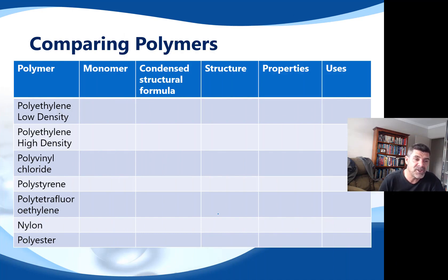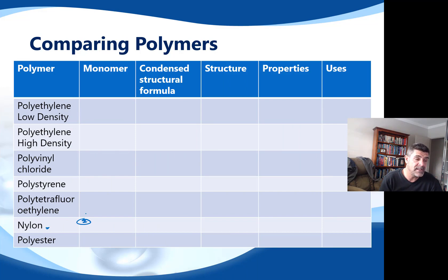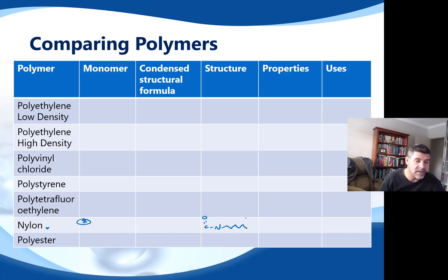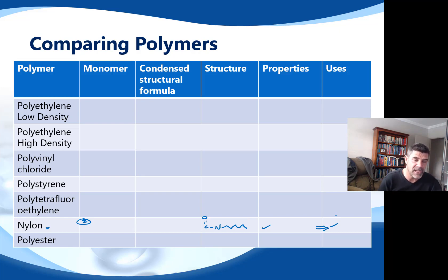Here's the table you've seen on a few occasions now, and we're down to nylon. When looking at nylon, you might consider identifying two monomer units. The condensed structural formula is probably going to be less condensed, so we want to make sure we've identified those key functional groups that are part of this molecule and expanded them out so we know where those repeated functional groups are. Then list the properties and uses, making sure that one relates very closely to the other — as we've done before.